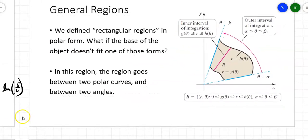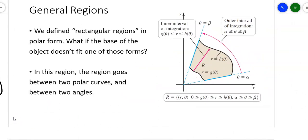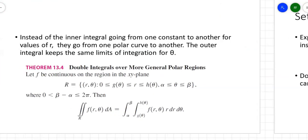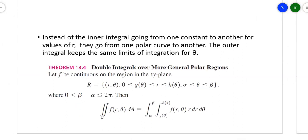Now let's look at general regions. Just like when we integrated over general regions in rectangular form, now you're bounded by two curves. Your radius, instead of being constants, will be functions of theta. So you have an inside limit g(θ) and an outside limit h(θ) for r, and your theta values have their own bounds as well. The formula is still f(r, θ) · r dr dθ, except the limits of integration are now functions.